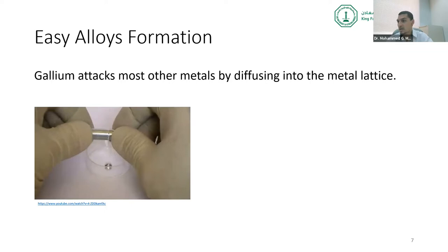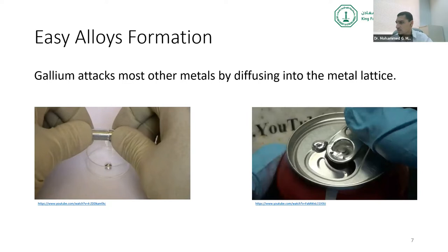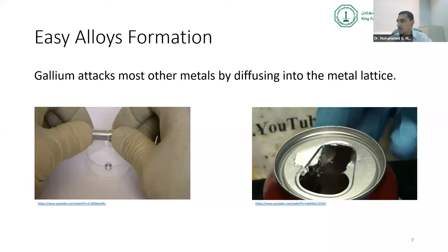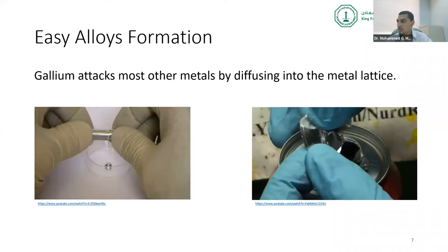In another video, we see gallium with aluminum. At first nothing happens, but when we scratch the surface to remove oxides and expose the metals together, the gallium diffuses into the solid aluminum and forms a gallium-aluminum alloy at room temperature, without any need to heat or apply severe conditions. What we end up with has different mechanical and physical properties than the original materials.